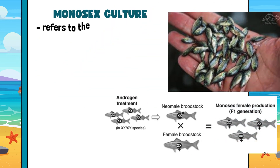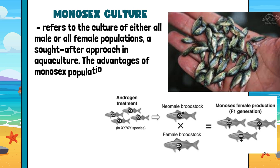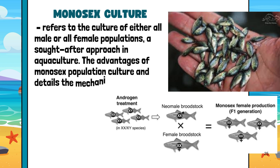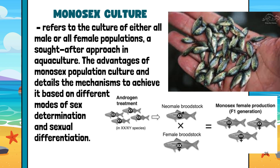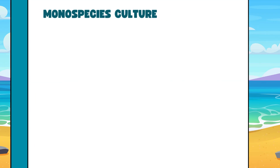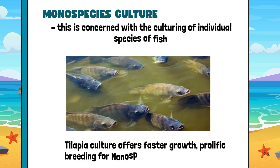Monosex culture refers to the culture of either all-male or all-female populations. It is a sought-after approach in aquaculture because of its advantages, and it explores mechanisms to achieve it based on different modes of sex determination and sexual differentiation. Monospecies culture focuses on culturing only one species of fish. Tilapia culture, for example, offers faster growth and prolific breeding when raised as a monospecies.